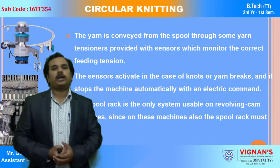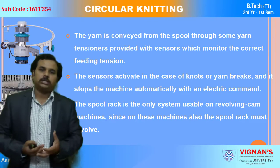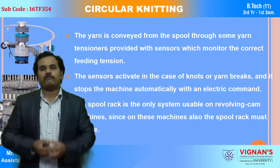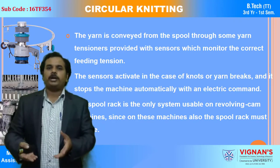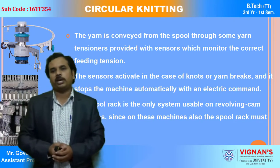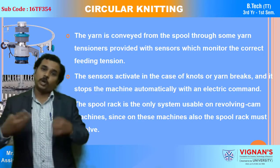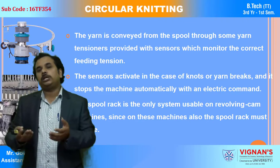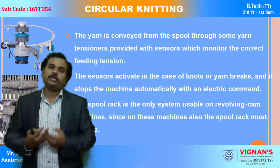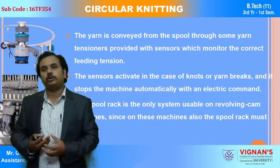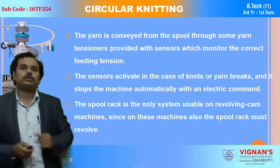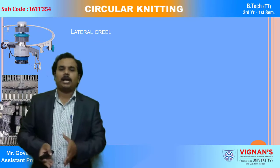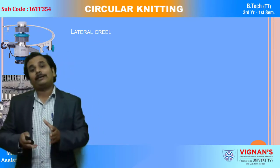One more thing — whenever packages are exhausted, the weft package generally has a weight of 1.5 kg or 1.8 kg depending on customer requirement. When the package is exhausted, we need to change it, and it is very difficult to mount packages at the top side of the machine. By these drawbacks, we have the second type, that is called the lateral creel.